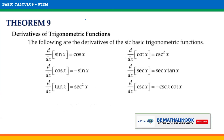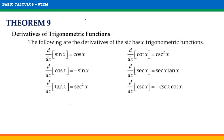Theorem number 9: Derivatives of trigonometric functions. The following are the derivatives of the 6 basic trigonometric functions. d over dx of sin x equals cos x. d over dx of cos x equals negative sin x. d over dx of tan x equals sec squared x. d over dx of cot x equals negative csc squared x. d over dx of sec x equals sec x tan x. And d over dx of csc x equals negative csc x cot x.